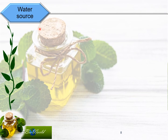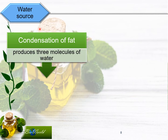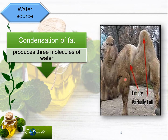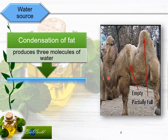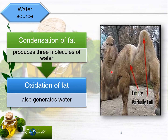Next is the role of triglycerides as a water source. The condensation reaction to produce triglycerides will generate three molecules of water. That is why when animals that live in dry areas, like the camel, are given enough food, the animals will store that food as fat in their hump so that they can generate water for survival. But as they continue to move into the desert without receiving enough food, the fats will be oxidized — and when you oxidize fat you can also generate water. That is why this hump is empty, since the camel has already oxidized the fat in it.